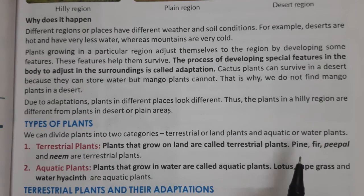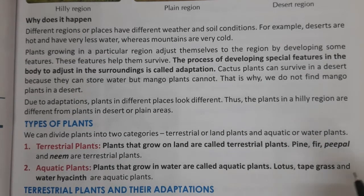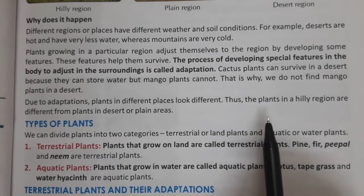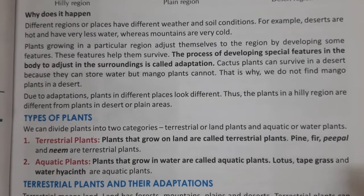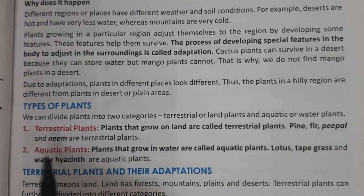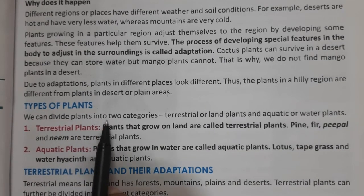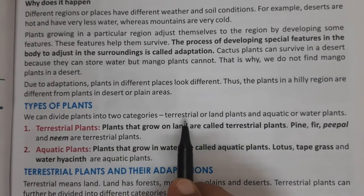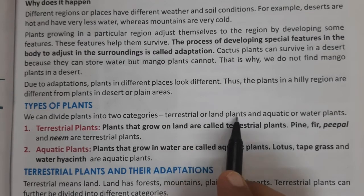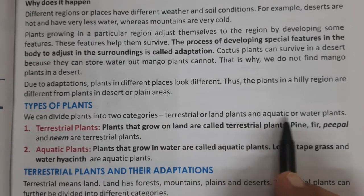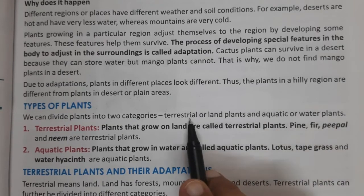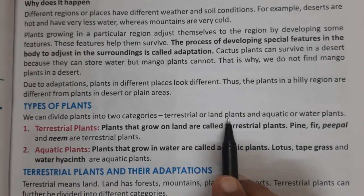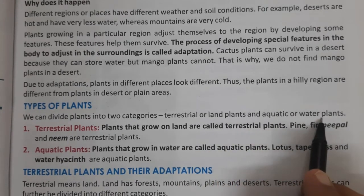We can divide plants into two categories: terrestrial or land plants, and aquatic or water plants. Terrestrial refers to land, and aquatic refers to water.